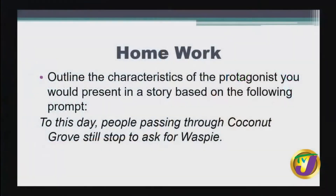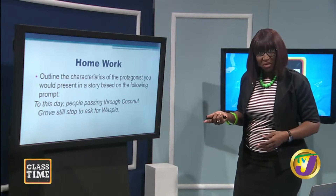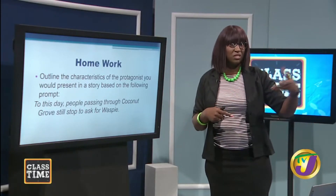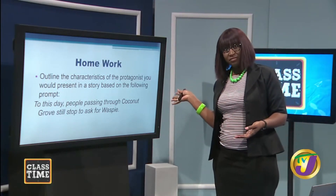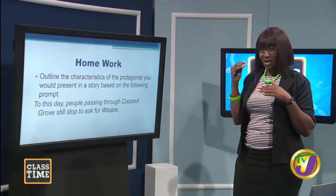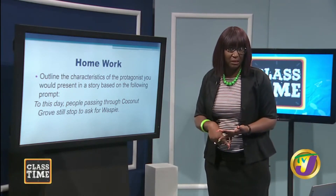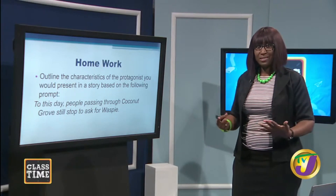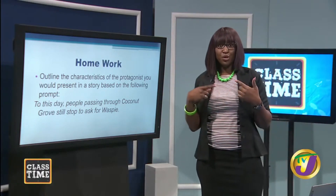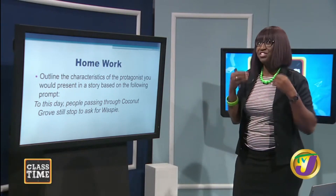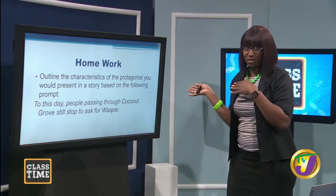Here is your homework. You're going to outline the characteristics of the protagonist you would have in this story prompt: 'To this day, people passing through Coconut Grove still stop and ask for Waspy.' Who do you think the protagonist would be — Waspy or someone else? Maybe Waspy was a bad man and somebody ran him out, so that person becomes the focus. Or perhaps you want to focus on Waspy himself. Think about all the things we have discussed today — what will your protagonist look like, how are you going to show instead of tell us about them, and how will you put it all together to create a rich development of whoever you choose as the protagonist in this prompt?